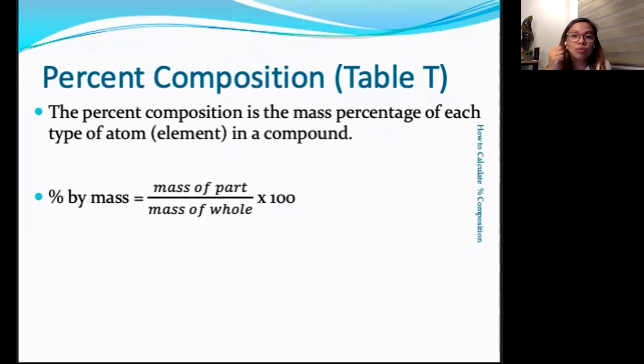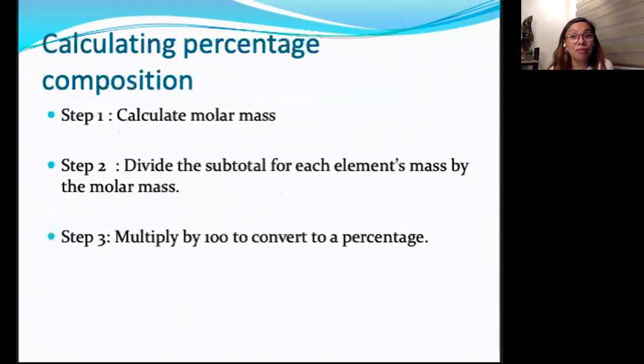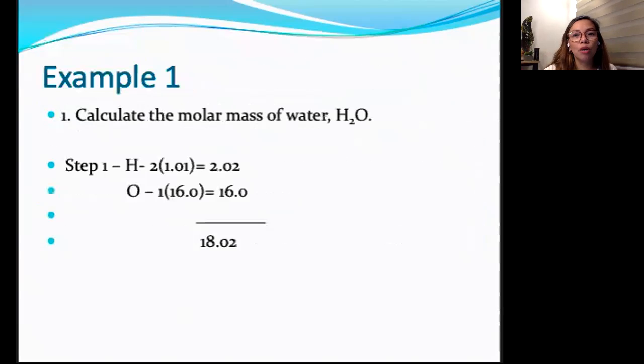Now, how do we do that? What are the steps that you're going to work to get the percentage composition of the elements in a compound? First, you need to calculate the molar mass. Then, you divide the subtotal for each element's mass by the molar mass. And then, you multiply by 100 to convert to a percentage.